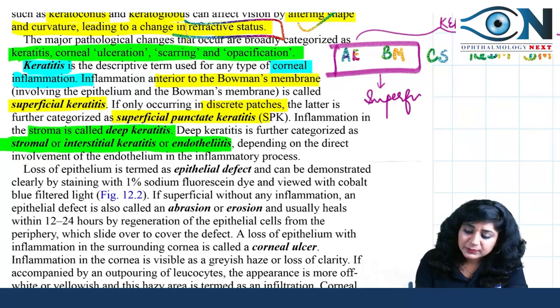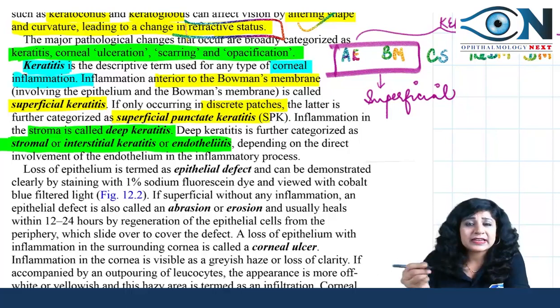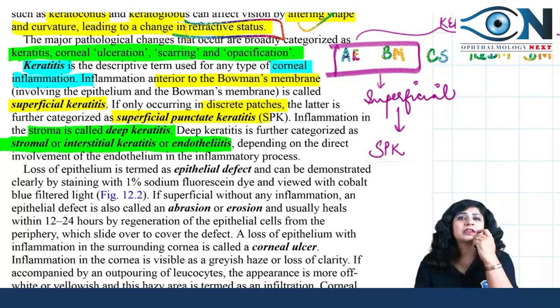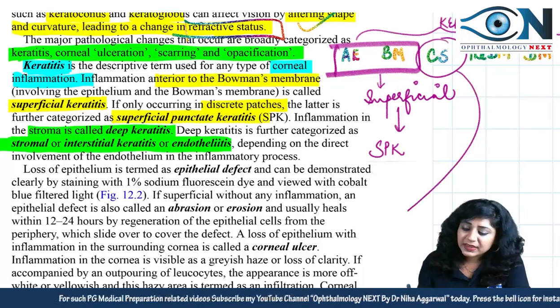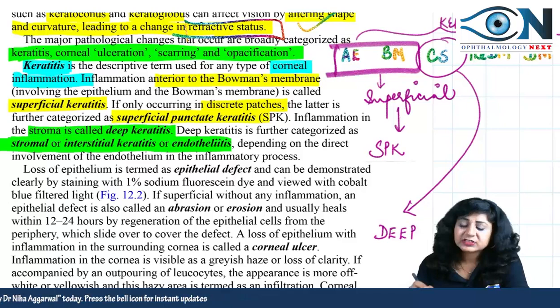Superficial punctate keratitis occurs when inflammation is present in punctate patches — this is a very common finding, even as an adverse effect of drugs. If inflammation is happening in the stroma, it is called deep keratitis. So the distinction between superficial and deep keratitis is very clear.